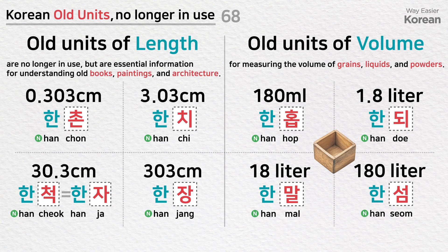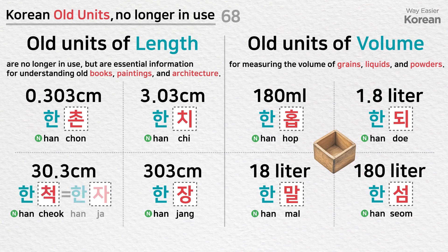Old Korean units of length: 0.303 cm = 한 촌; 3.03 cm = 한 치; 30.3 cm = 한 척 / 한 자; 303 cm = 한 장. Old Korean units of volume for measuring grains, liquids, and powders: 180 ml = 한 홉; 1.8 L = 한 되.